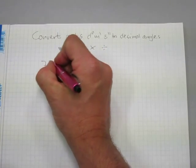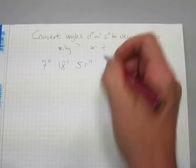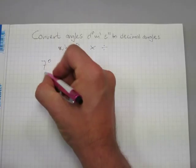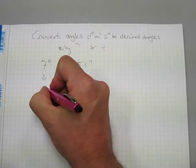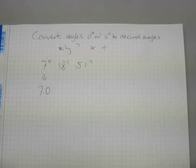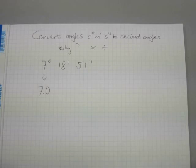How about 7 degrees 18 minutes and 51 seconds? How do we convert that into decimal degrees? Well, 7 degrees in decimal format is 7.0. That was simple enough. How about the 18 minutes? The question is, what part is 18 minutes of a whole degree? There are 60 minutes that make up one degree.